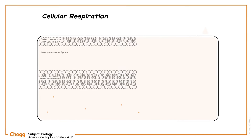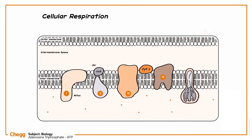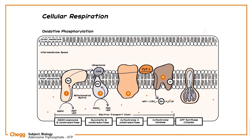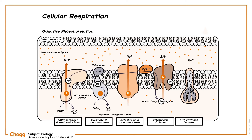Let's first talk about cellular respiration. The generation of ATP is achieved majorly through the process of oxidative phosphorylation. In this process, several electrons move through various complexes in the mitochondrial membrane, which pumps protons against the gradient. This proton-motive force then helps manufacture ATP molecules.